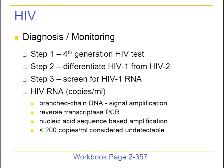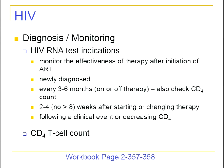Viral load is used to monitor the effectiveness of therapy. After starting antiretroviral therapy, you want to obtain viral loads to ensure they are going down. Check a viral load as soon as someone is diagnosed HIV positive, then every three to six months on or off therapy, along with a CD4 count. CD4 counts measure immune function and are used closely to guide treatment and prophylaxis of opportunistic infections.